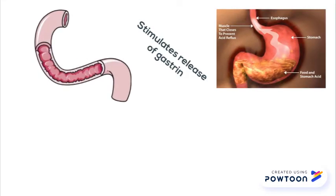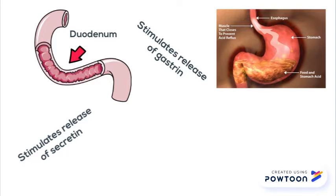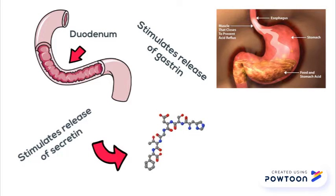Back to the food you just ate: it has entered your stomach and the presence of protein has stimulated the secretion of the hormone gastrin, hence gastric acid. This hormone aids in the mobility of the digestive tract to move the food to the duodenum, which then causes the production of secretin.